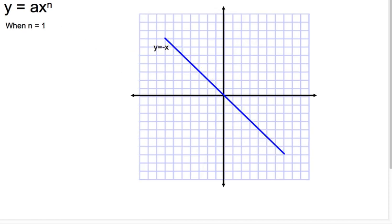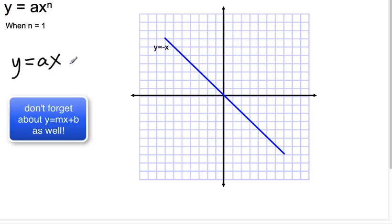The next example of y equals ax to the n, now is when n equals 1. So when n equals 1, when your exponent there is 1, you get a function that just looks like y equals ax. So this is a linear function, and again, we've had experience with that before.